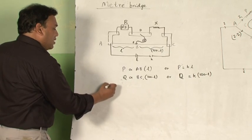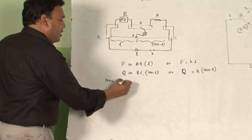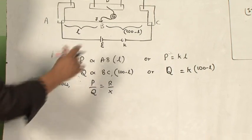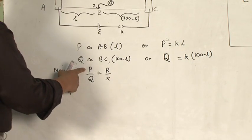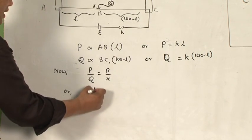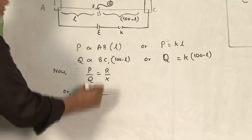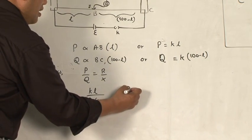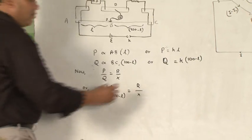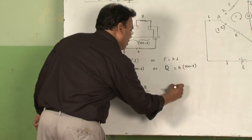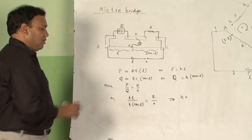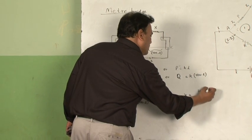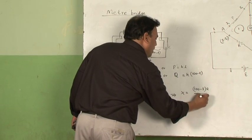Using the condition for balancing of a Wheatstone bridge, P by Q equals R by X. Substituting the values, P is KL and Q is K(100 minus L), so KL divided by K(100 minus L) equals R upon X. The K's cancel, giving X equals (100 minus L) multiplied by R upon L.